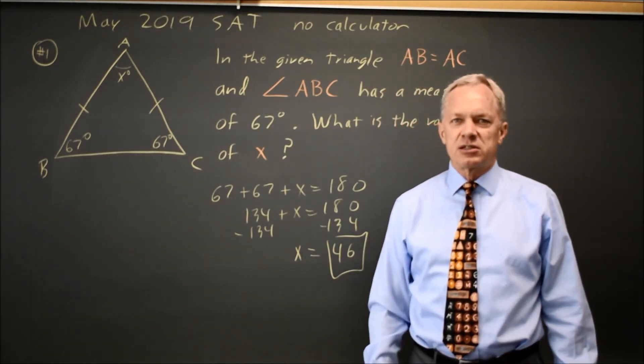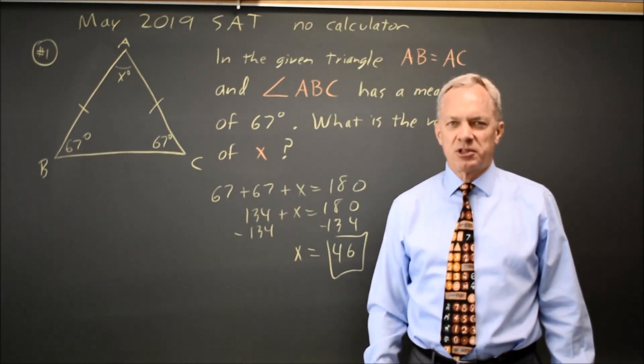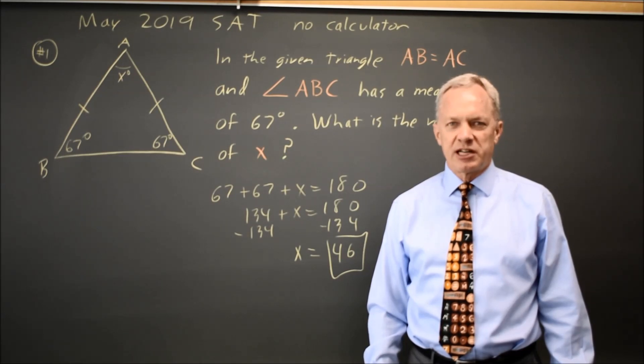Key facts: If two sides are equal, the opposite angles are also equal, and the angles of a triangle add up to 180 degrees.